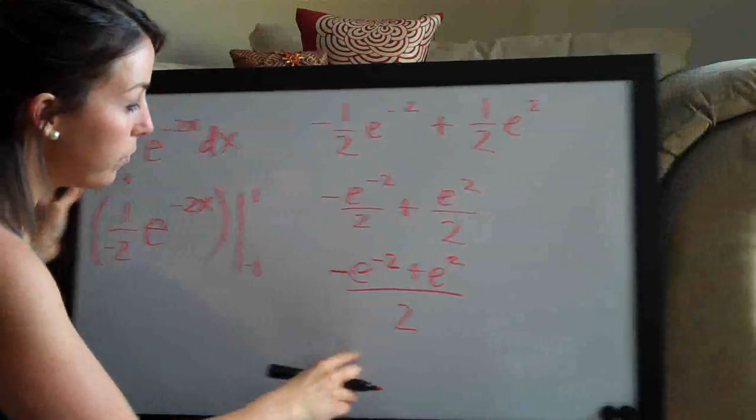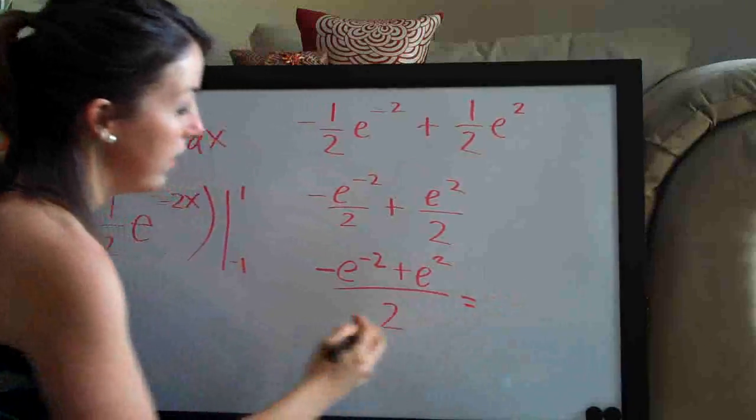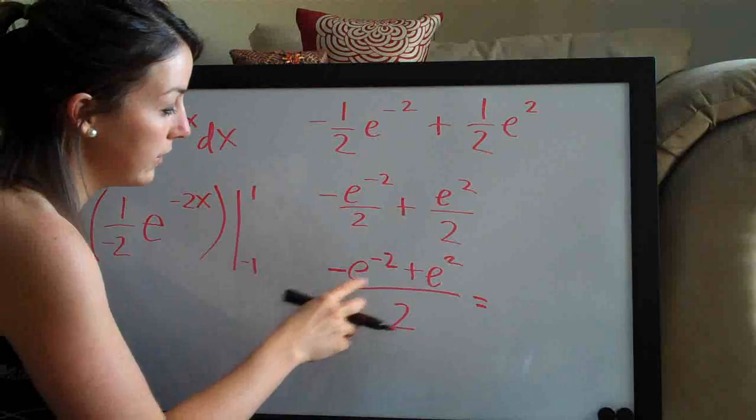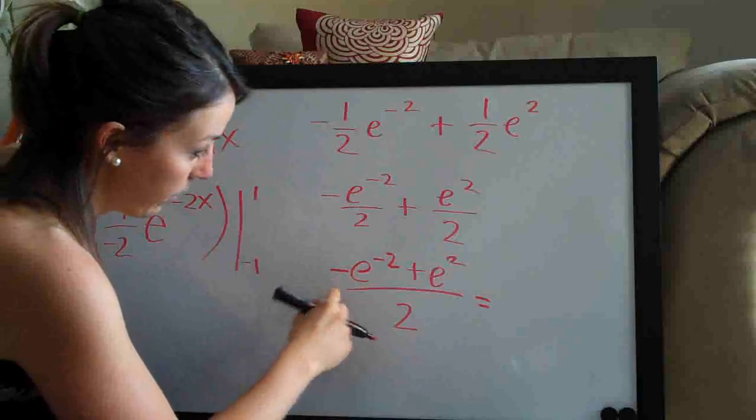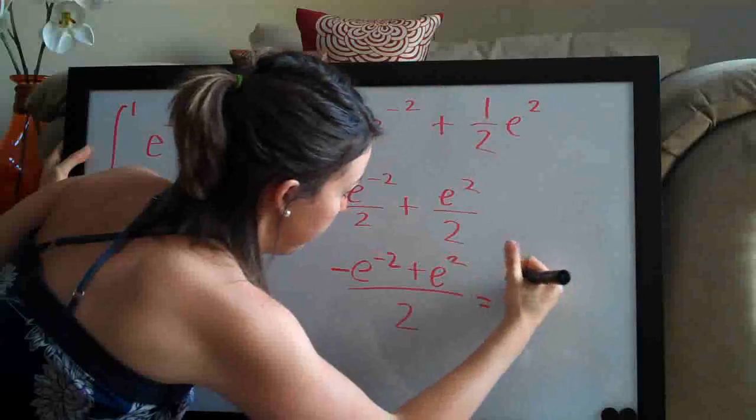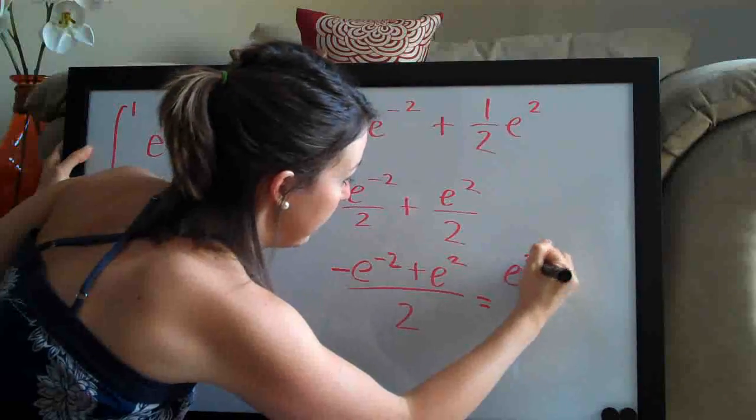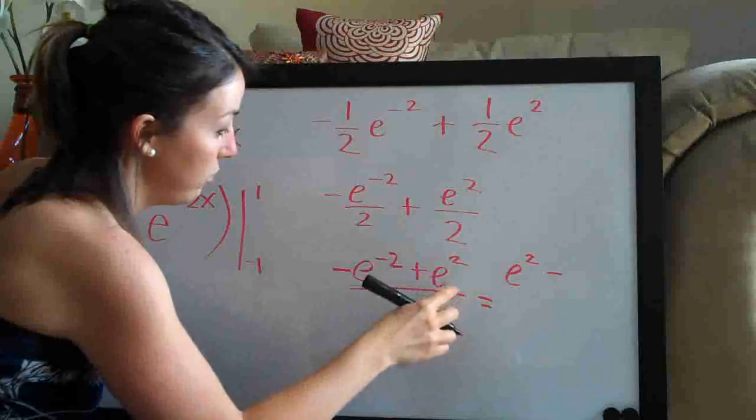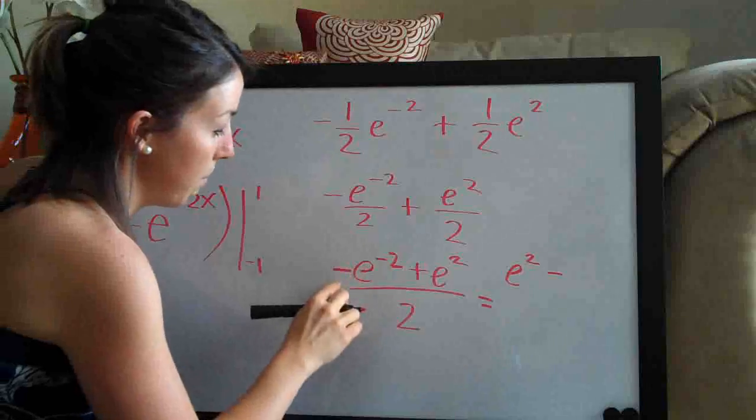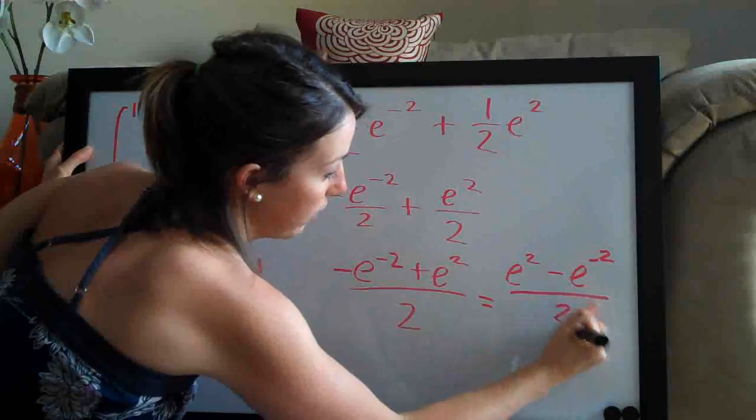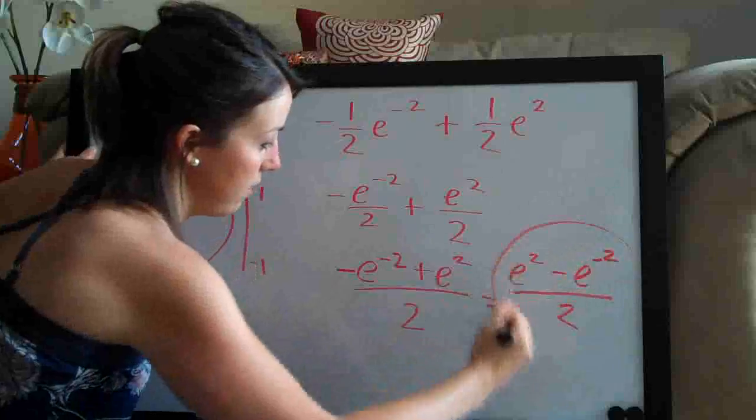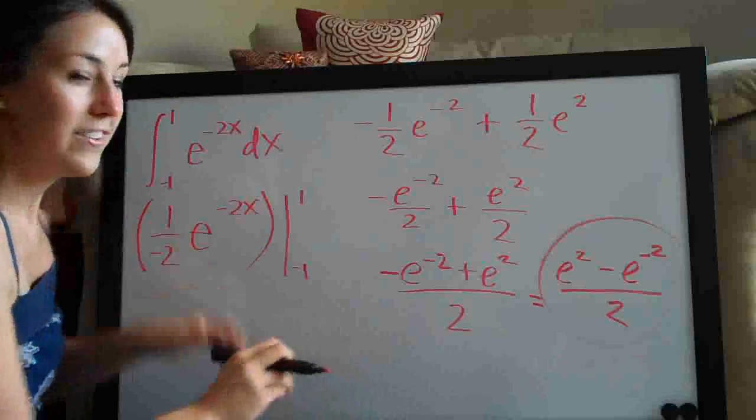And what I would actually prefer to have us do is, if possible, we always like to leave with a positive instead of a negative. So it doesn't really matter but it's just cleaner if we write e squared, we're flipping these two around, e squared first and then minus e to the negative 2 and then that whole thing over 2. So this is actually our final answer. Thanks guys!